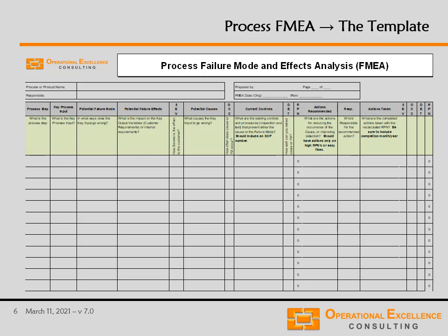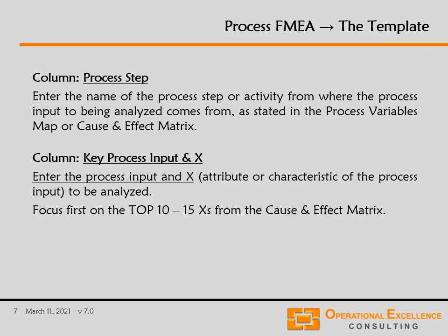More important are the different columns that you see here in the process FMEA template. Let's first discuss the different columns and then look at an example of how we develop a process FMEA based on results from our cause and effect matrix. We're going to take one of the process inputs and X's from the top 10 to 15 that got the highest rating, and type that process input and X into column 2. In column 1, we enter the name of the process step or activity from where that process input comes from.